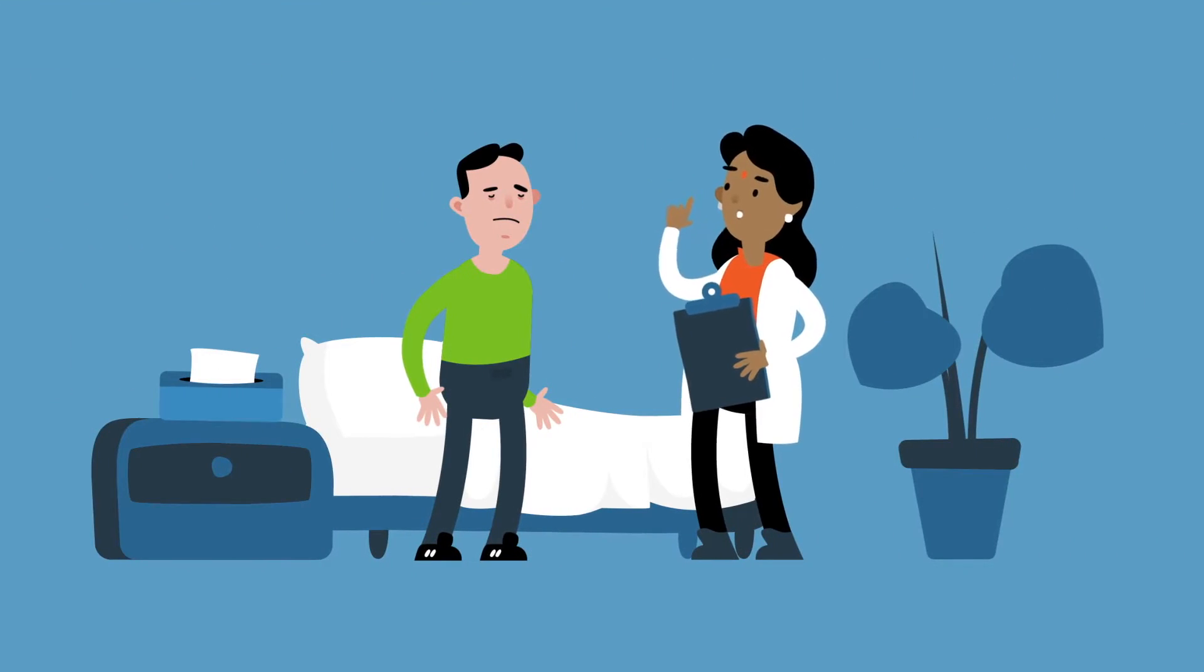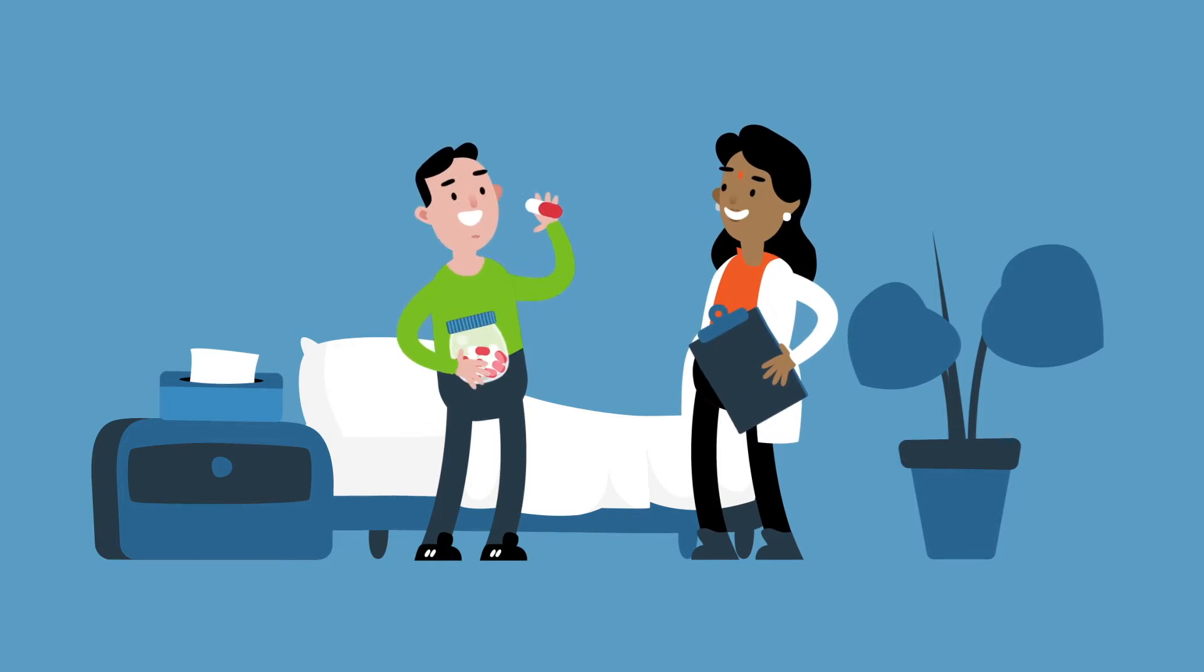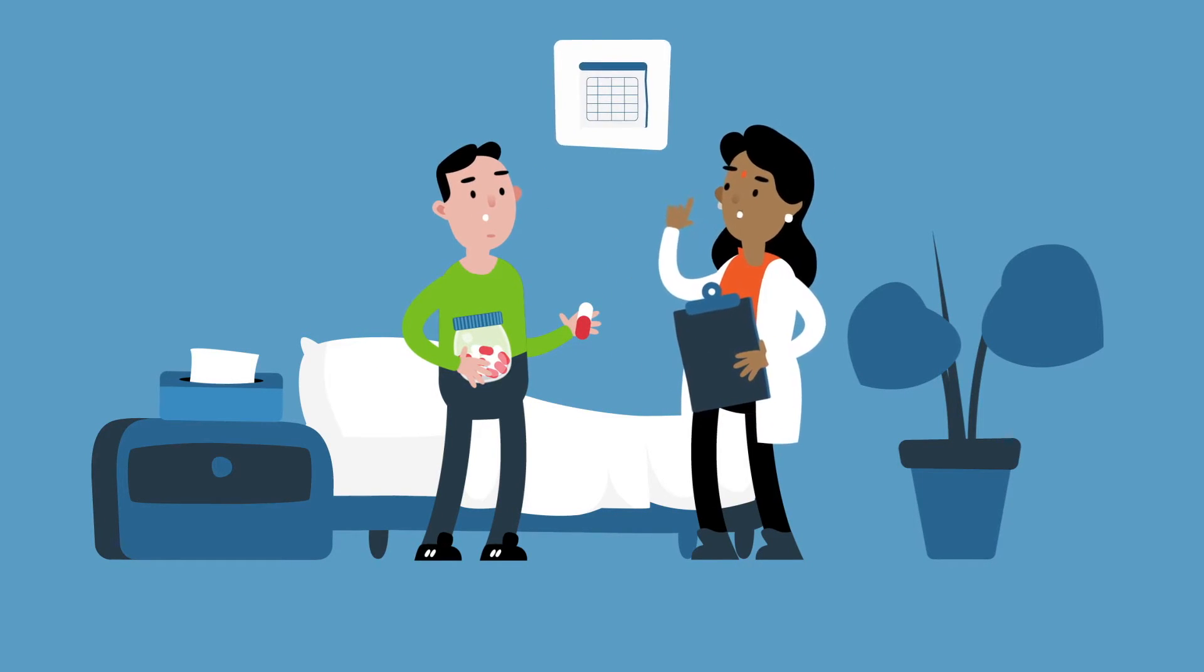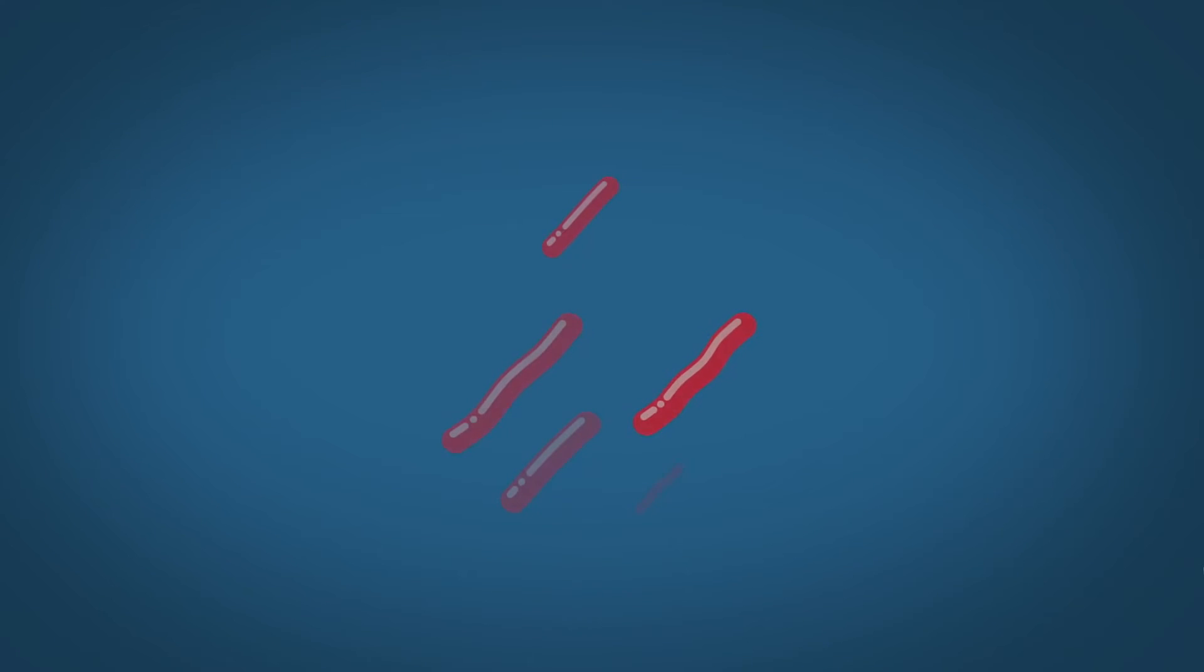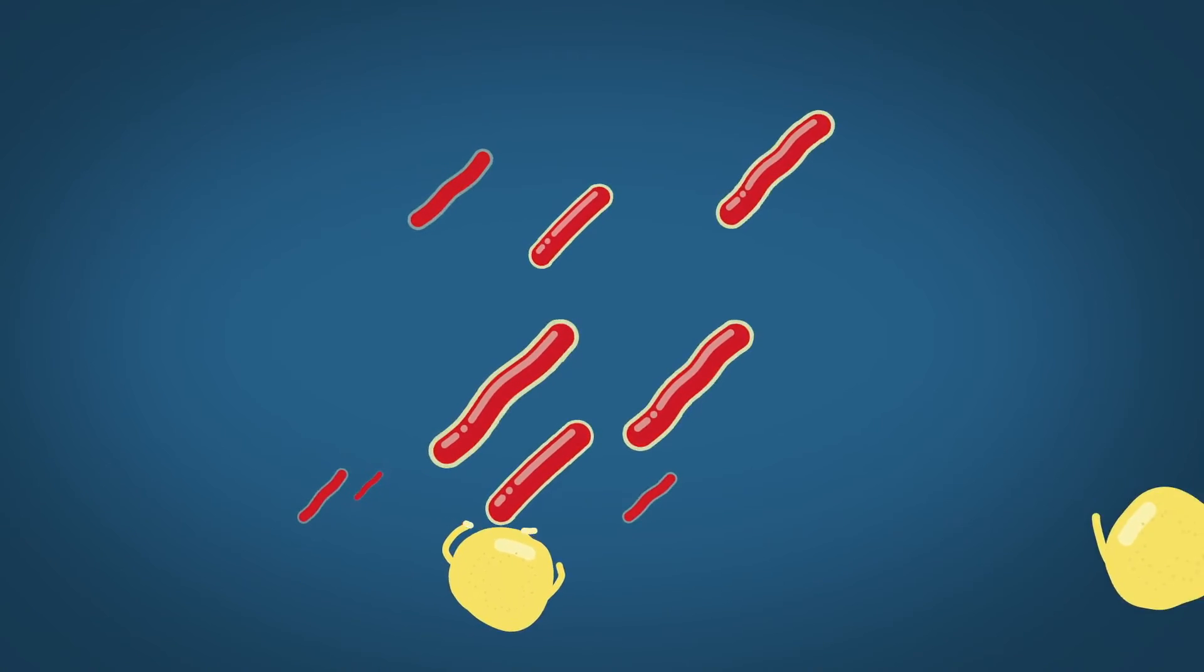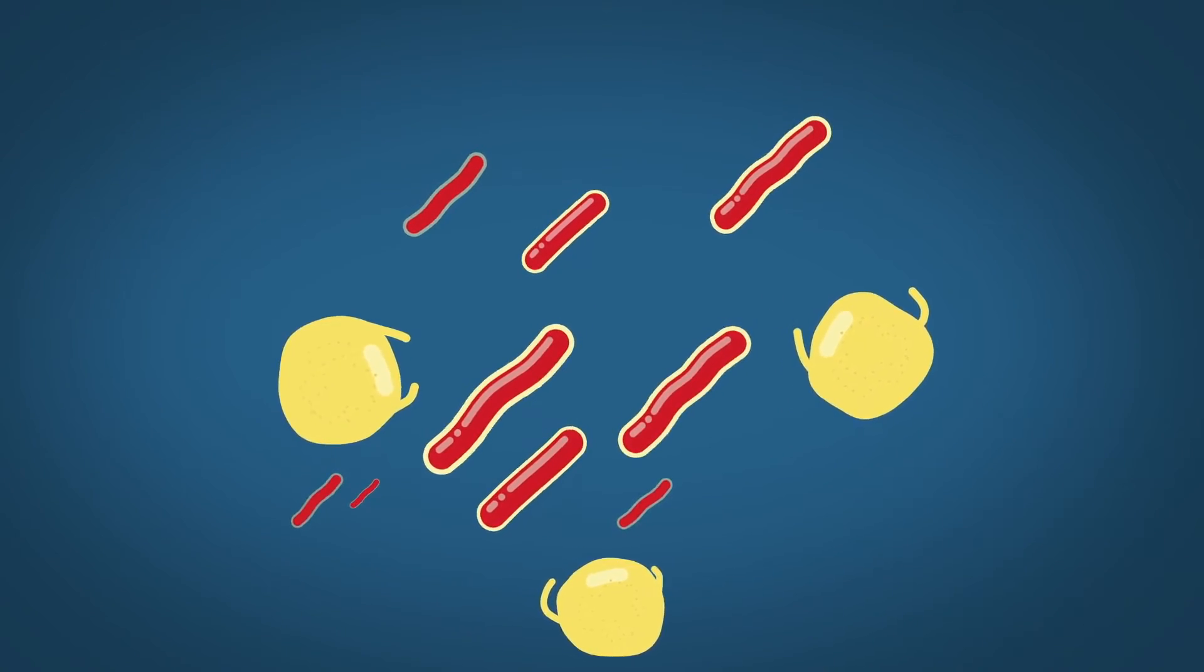This can be treated with a combination of TB drugs. The course takes at least six months and needs to be completed with the right combination of drugs. If not, the bacteria become resistant and a variant develops that is very hard to treat.